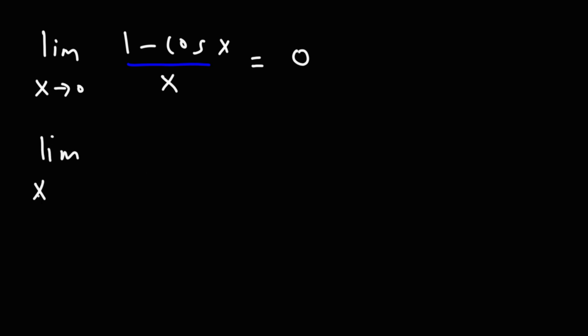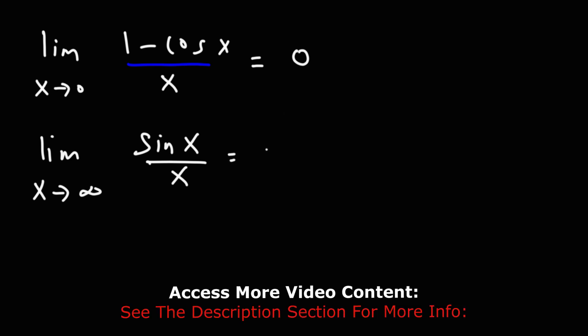Now, the limit as x approaches infinity of sine x over x. This is going to be 0 as well. So, the limit as x approaches infinity of the expression 1 over x. That's 0.